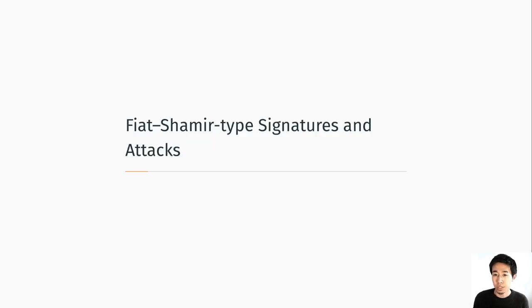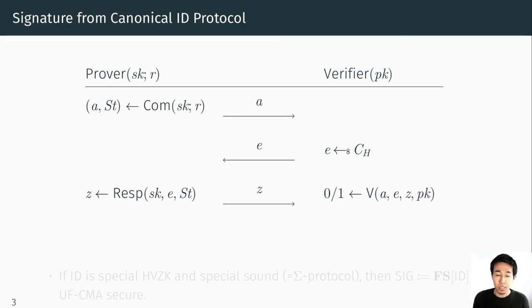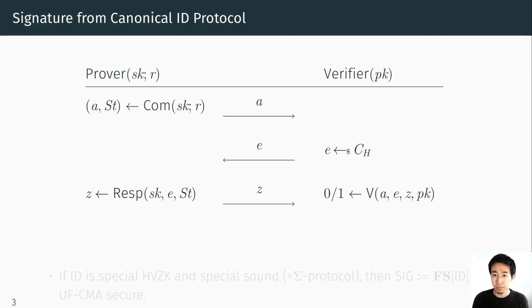What are Fiat-Shamir type signatures? They are usually derived from a three-round canonical identification protocol. Here the prover holds a secret key SK together with randomness, and the verifier has some public key. The prover commits to SK and R, outputs the commitment and some state, and sends the first message to the verifier. The verifier then sends back a challenge uniformly chosen from some challenge space, and the prover responds with a message Z.